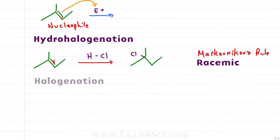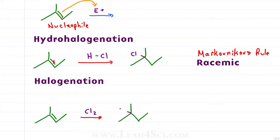For halogenation, we add X2 — for example Cl2 — to give us a chlorine or halogen on both carbons of the pi bond. This is an anti-addition where the second halogen adds opposite the first, due to the halonium or bridged intermediate.